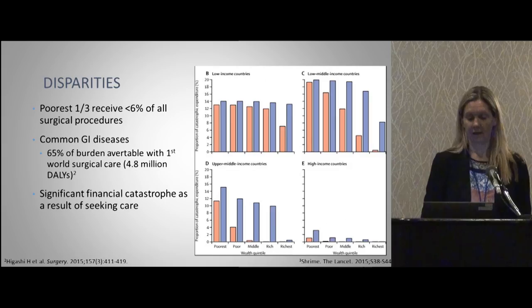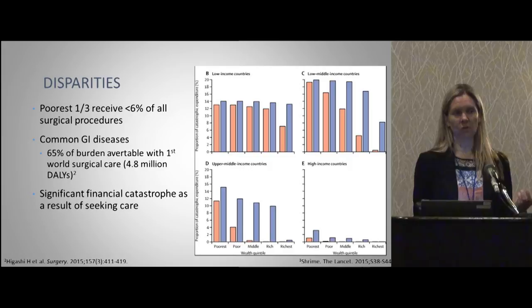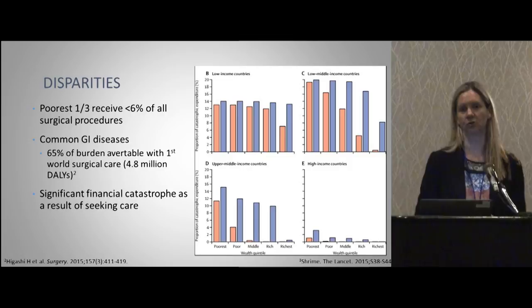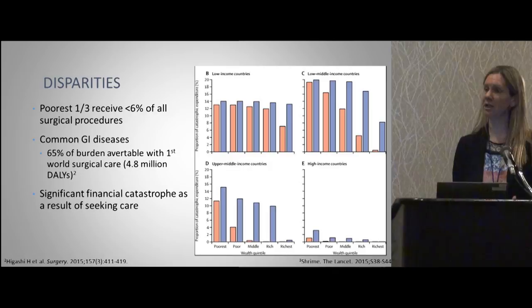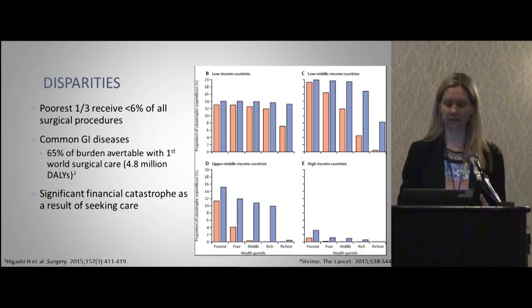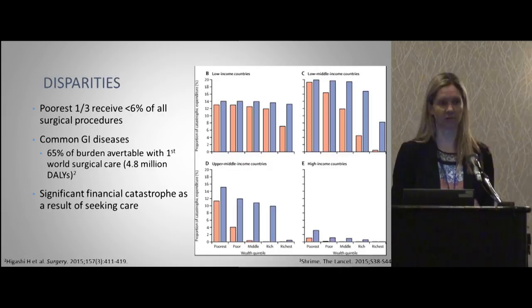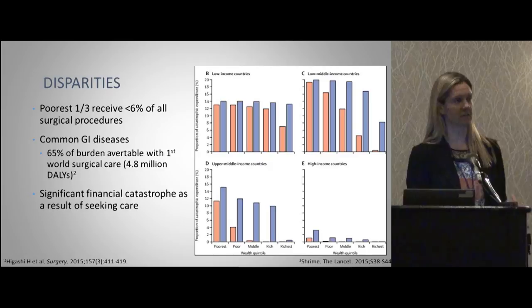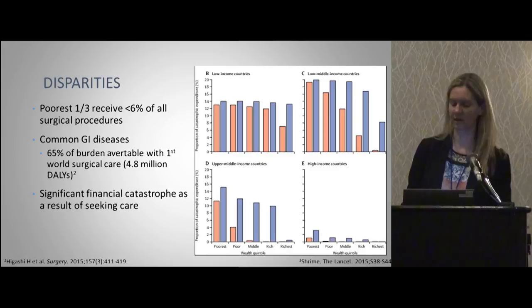In terms of disparities, the poorest third of people in the world receive only 6% of all surgery performed globally — the vast majority is done in high-income countries. For common GI diseases — appendicitis, biliary disease, inguinal hernias, and abdominal hernias — 65% of the worldwide disease burden could be alleviated with first-world levels of surgical care. This could save 5 million disability-adjusted life-years annually — years of productive life lost because people cannot work due to these diseases.